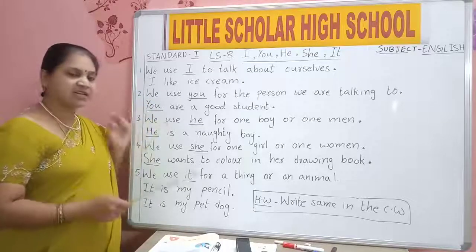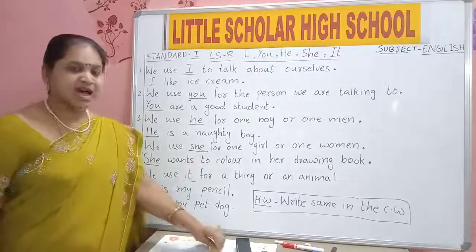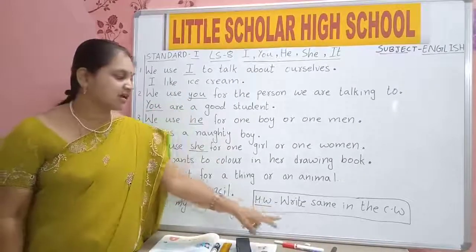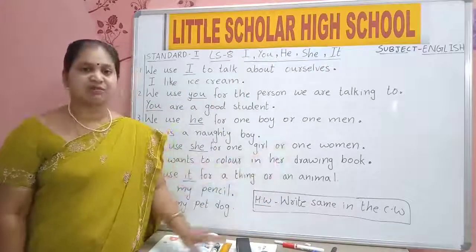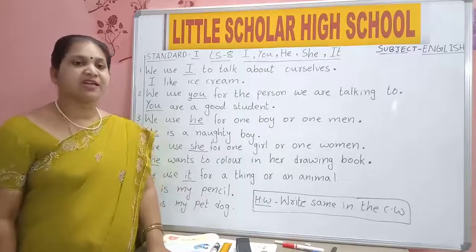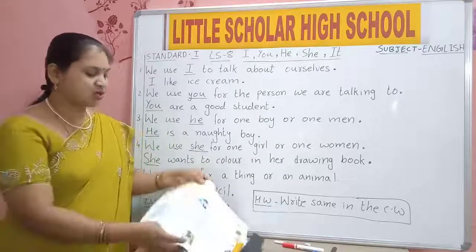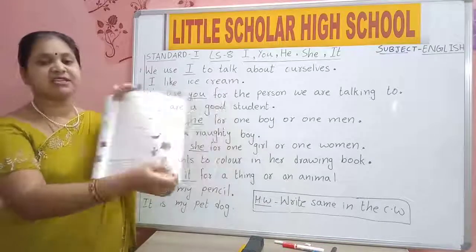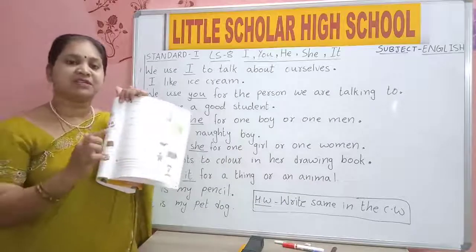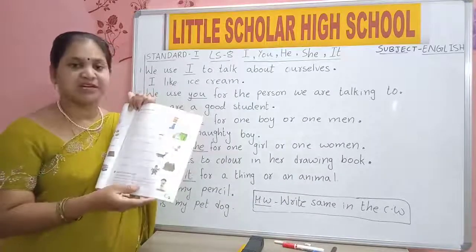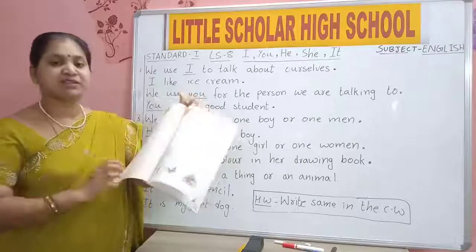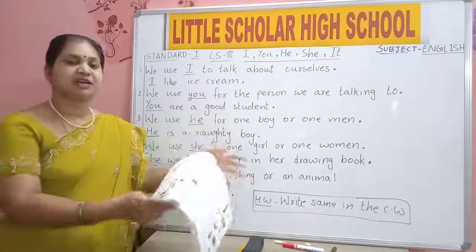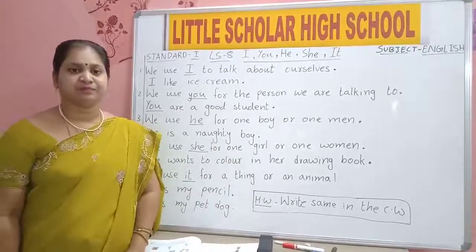Open your mouth. Write correctly and neatly in your classwork. After writing, you will read this two times. Write the same in your classwork. Do it very neatly. After writing, two times you should read. Check your test book also — we have completed till page number 37. Open and check whether you have written all the pages. Complete your test book and write your classwork very neatly. Thank you, children.